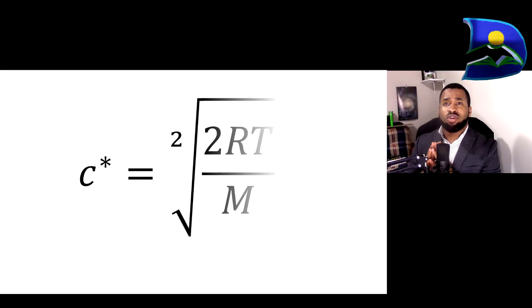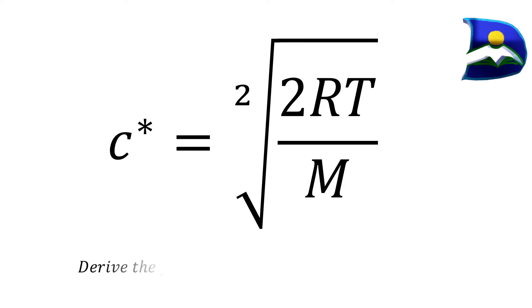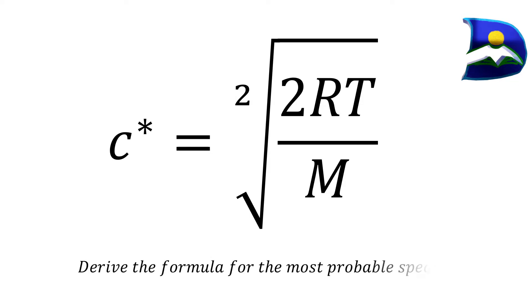In this video, we're going to derive this formula: c-star is equal to the square root of 2RT over M. Looking at this, we can determine c-star to be the most probable speed of a particular molecule in a specific gas.